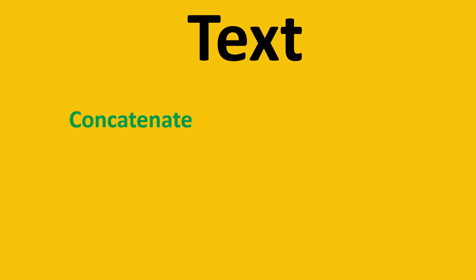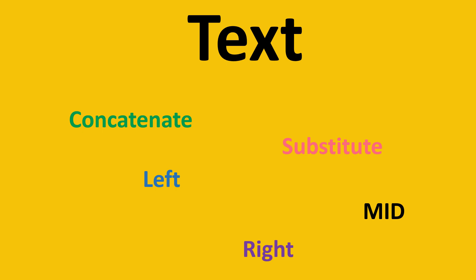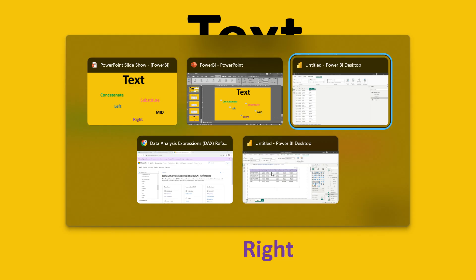In Power BI we have a whole set of text DAX functions. What we are going to look into are those which are most commonly used. As per my experience, CONCATENATE, SUBSTITUTE, LEFT, RIGHT, MID functions are something which are very frequently used, and also sometimes LOWER, UPPER, etc. So let's jump into Power BI and try to understand these functions with the help of some examples.